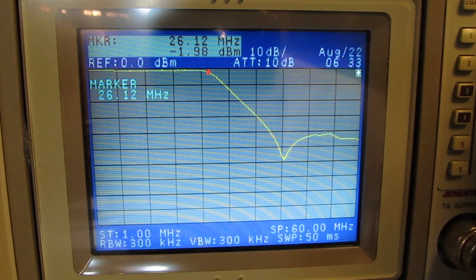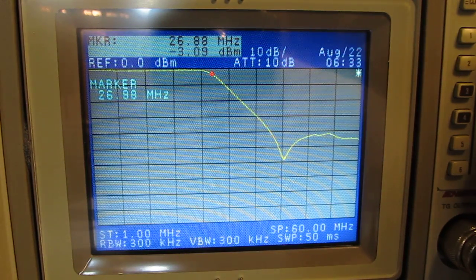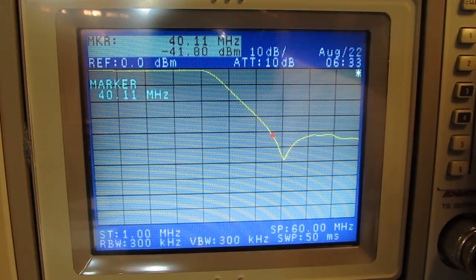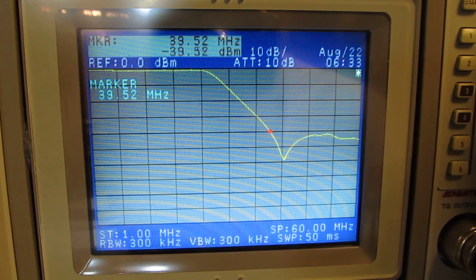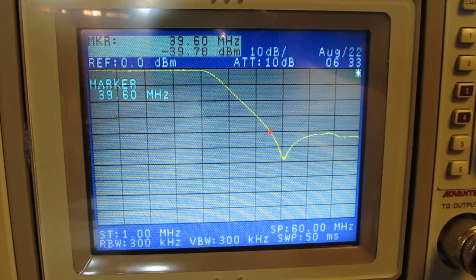We're about 3 dB down right about here, about 26-27 megahertz. And we're about 40 dB down at about 39 megahertz. Again, nice place to have the filter for that band.